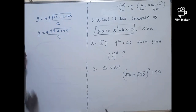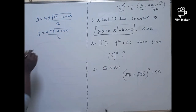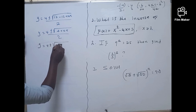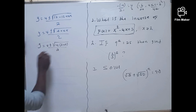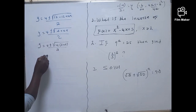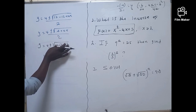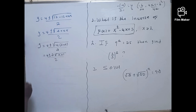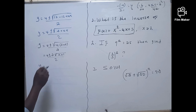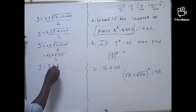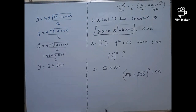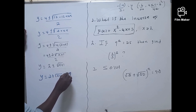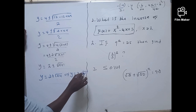Simplifying further: under the radical we have 4(1 + x), and by the law of radicals, √(4(1+x)) = 2√(x+1). So y = (4 ± 2√(x+1)) / 2. Finally, y = 2 + √(x+1) or y = 2 - √(x+1). These are the two candidate inverses of the function.